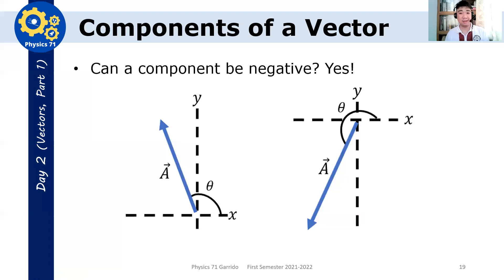Now, can a component be negative? Yes. So, the magnitude can never be negative. That's important. A magnitude never becomes negative. Because it refers to the length of the vector. But the component can be negative. It depends on your coordinate system. For example, here, in this example, the x component is negative. Because if you project this vector onto this axis, the direction is ax. And, therefore, this is negative.